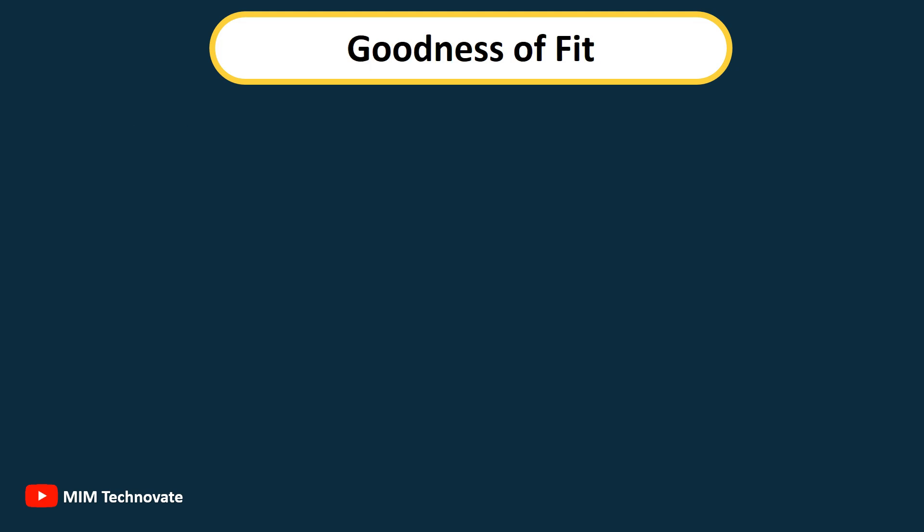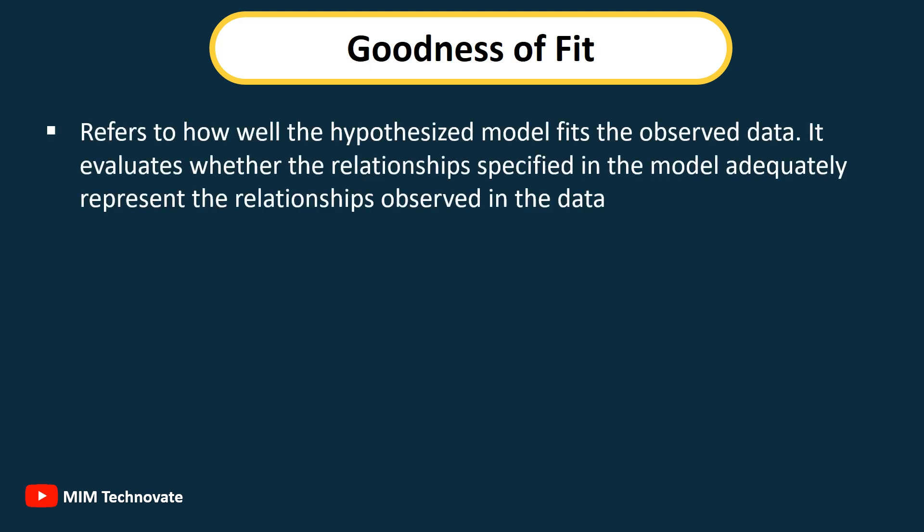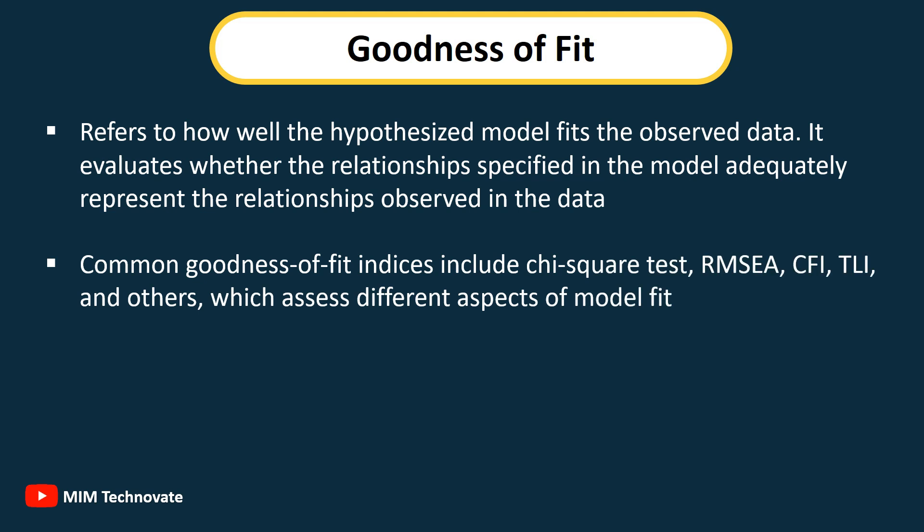Goodness of Fit: Refers to how well the hypothesized model fits the observed data. It evaluates whether the relationships specified in the model adequately represent the relationships observed in the data. Common goodness of fit indices include chi-square tests, RMSEA, CFI, TLI, and others, which assess different aspects of model fit.